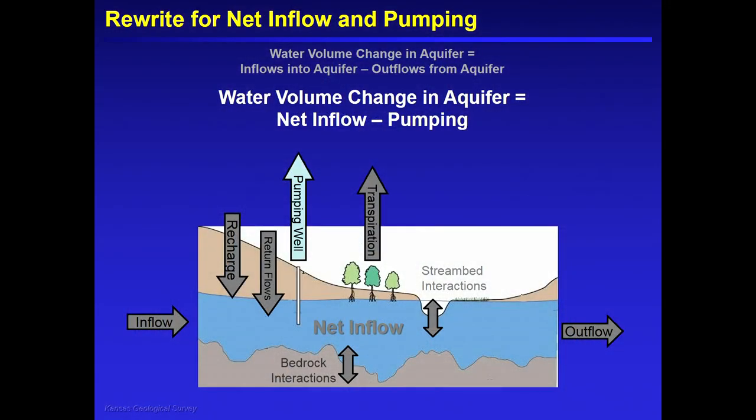So what we decided to do is say, we've got this water balance, but let's be frank about it — most of these components of the water balance we cannot currently quantify. The one that we can, with confidence in Kansas, is pumping, because virtually all the high capacity pumping wells in the High Plains aquifer are metered, reported annually, and subject to regulatory verification. So let's take all those other components and lump them together into a single term and simplify: water volume change in aquifer equals net inflow minus pumping. Net inflow is everything flowing in minus everything flowing out, save pumping. This is the same as the capture component of aquifer depletion assessments.